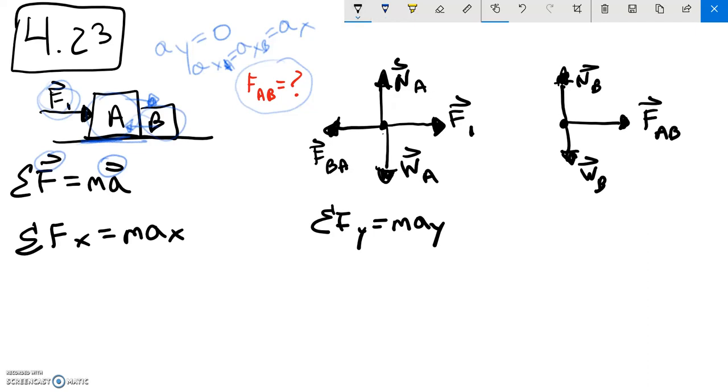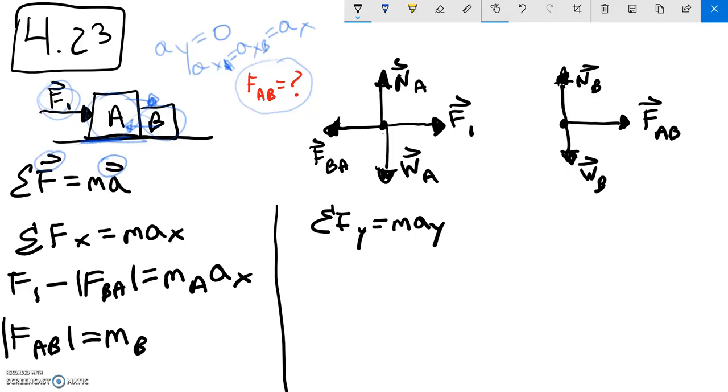Okay, next. For body A in the x: F1 minus the magnitude of F_BA, since it is pointing to the left, must be equal to m_A times a_x, since I said the acceleration were the same for both. Similarly for the other body, for B,